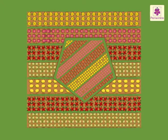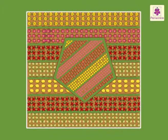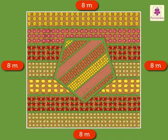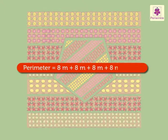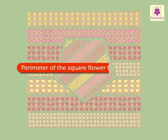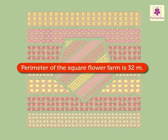Here, we know that the flower farm is square shaped. The length of each of its sides is 8 meters. So, to find the perimeter, we add the length of all four sides of the square. Thus, perimeter is equal to 8 meters plus 8 meters plus 8 meters plus 8 meters, which is equal to 32 meters. The perimeter of the square flower farm is 32 meters.